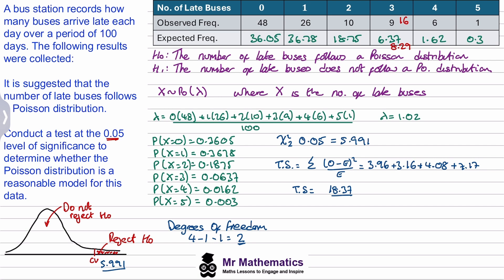Now when we compare this to the critical value, we are clearly far to the right, which means we're in the rejection region. So we'll say that because the test statistic is greater than the critical value, we reject H0. The Poisson model is not a reasonable model for the number of late buses.